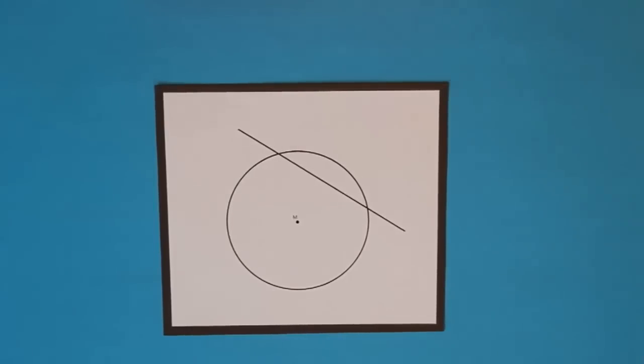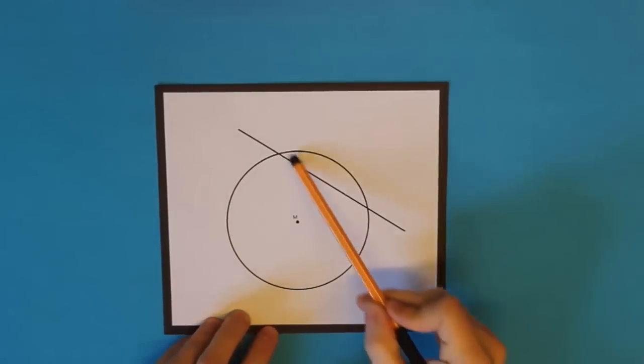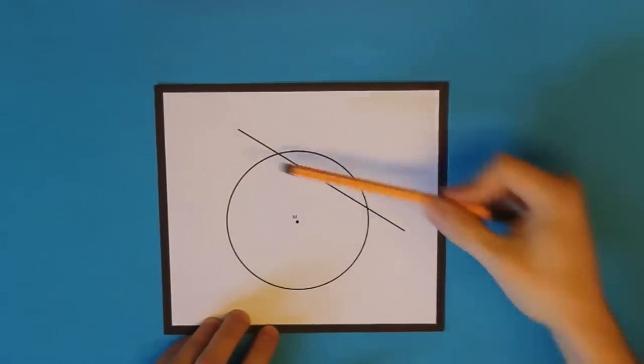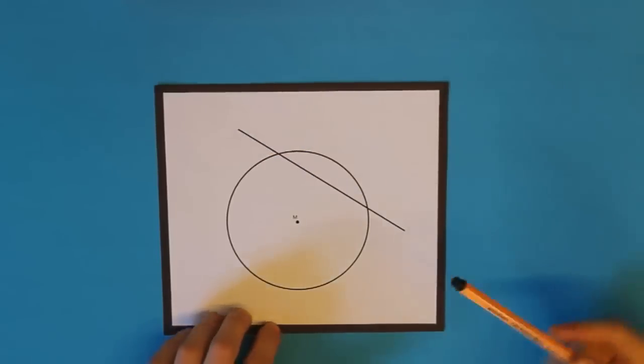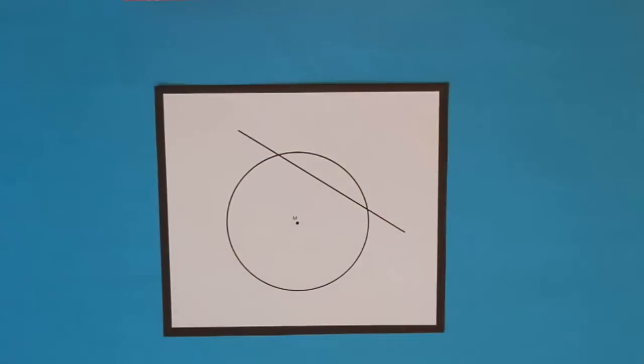Wie ihr sehen könnt, habe ich hier bereits etwas vorbereitet. Auf dieser Zeichnung hier sehen wir einerseits einen Kreis und hier haben wir eine Gerade. In diesem Video interessieren wir uns, welche besondere Lage diese Gerade gegenüber dem Kreis einnimmt.